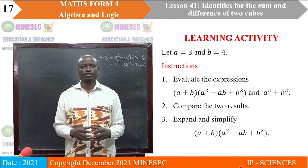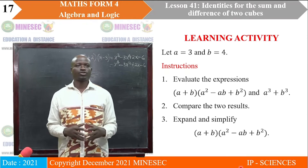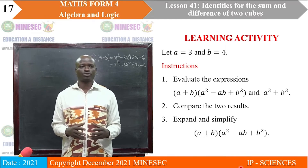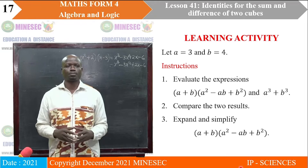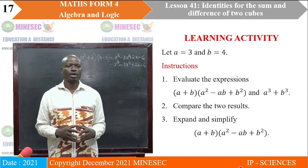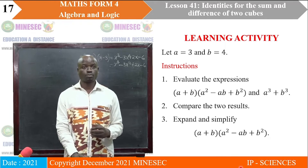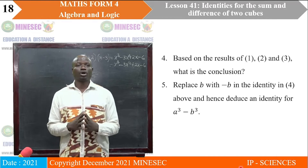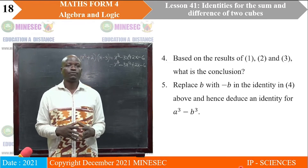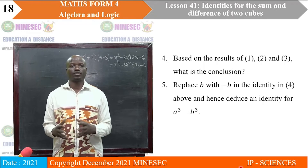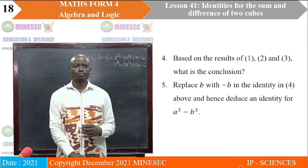Now we will look at a learning activity. Let A equal 3 and B equal 4. Instructions: 1) Evaluate A plus B into A squared minus AB plus B squared, and A cubed plus B cubed. 2) Compare the two results. 3) Expand and simplify A plus B into A squared minus AB plus B squared. 4) Based on results 1, 2, and 3, what conclusion can we draw? 5) Replace B with negative B in the identity from step 4 and hence deduce an identity for A cubed minus B cubed.